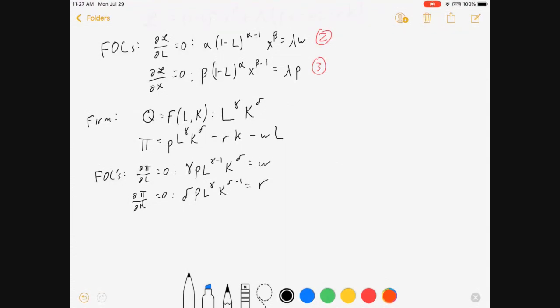And now our firm is all set up. We've got a few equations here. We've got the production function, which is that Q equals L to the gamma K to the delta, and we've got these first order conditions.